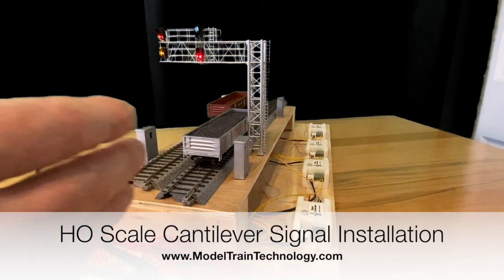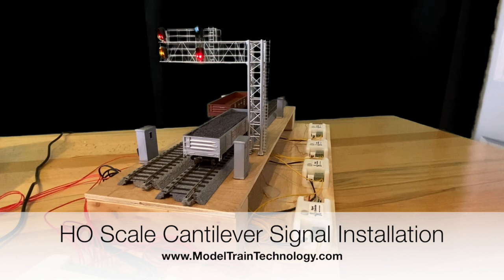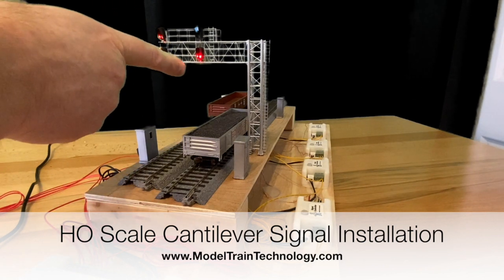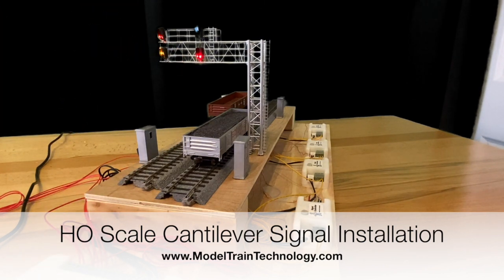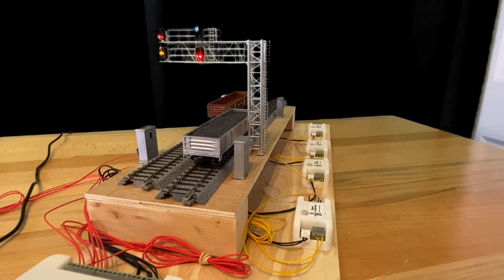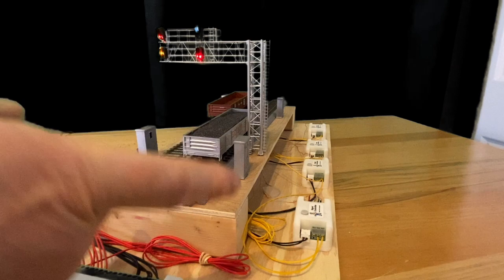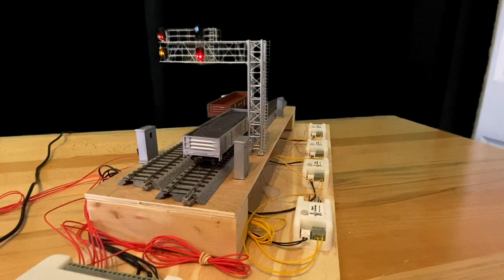Today we're going to set up and install the BLMA models cantilever signal bridge. This is a double track 3 over 3 signal and we're using the Model Train Technology starter kit which comes with a sensor and a signal, but we don't need the signal from it because we have the bridge.